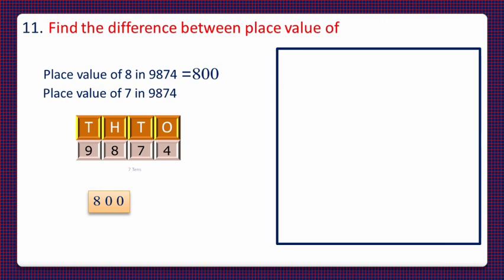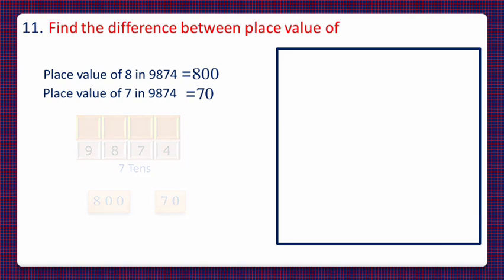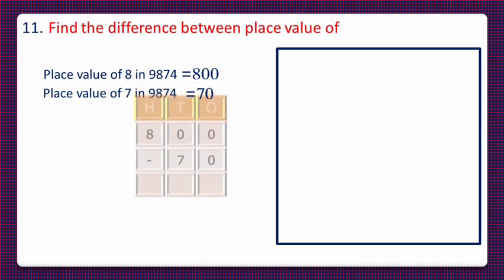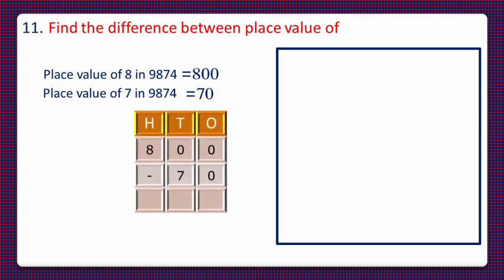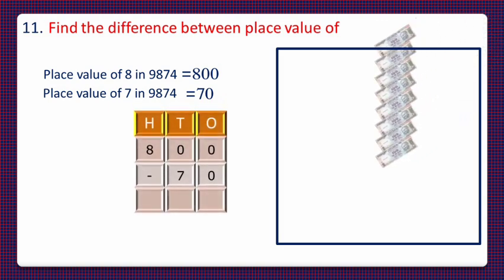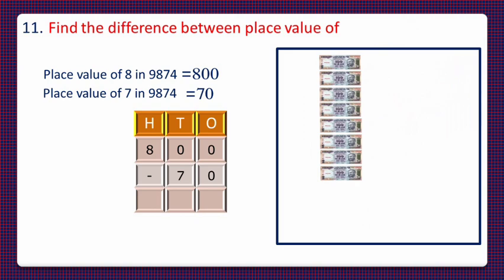Now let's check the place value of 7 in the given number. Since 7 lies at the tens position, 70 is the place value of 7. Now we have to find the difference between 800 and 70, so we'll take 800 in currency notes. First we subtract the ones: 0 ones from 0 ones is 0.